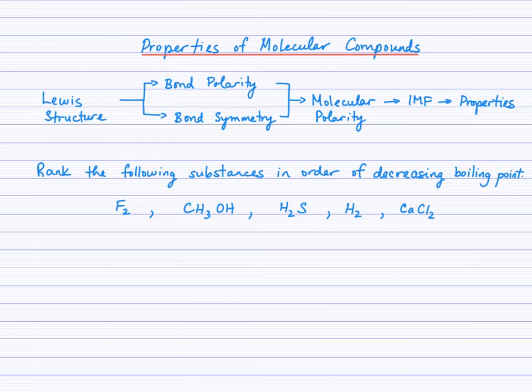Here's an example of a question: Rank the following substances in order of decreasing boiling point. First, to understand the instruction here, we have to understand the property of boiling point. We think of the temperature at which a liquid changes to the gas state. It's the intermolecular forces that are being overcome in order for the particles to move further apart and become in the gas state. If we need to arrange them in order of decreasing, then we're looking at highest to lowest.